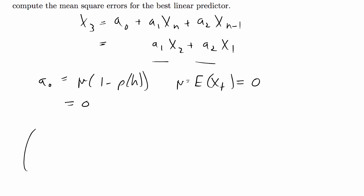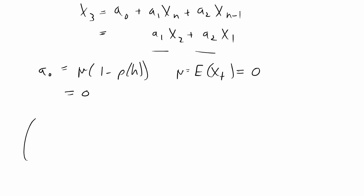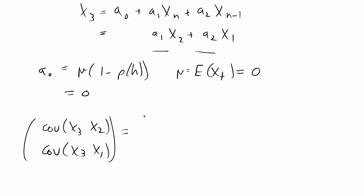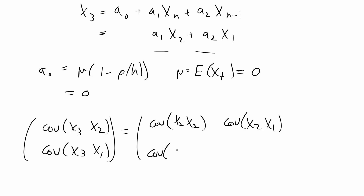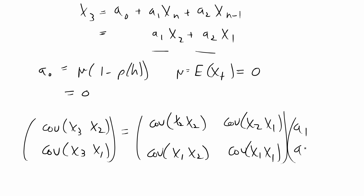To find a1 and a2 I'm going to do some matrix multiplication. The left-hand vector is the autocovariance functions of the predictor and the covariates. In this case the covariates are x2 and x1, so I have the covariance of x3 with x2, and the covariance of x3 with x1. This equals a covariance matrix of the covariates: covariance of x2,x2 (the variance of x2), covariance of x2 and x1, covariance of x1 and x2, and covariance of x1,x1, multiplied by the vector a1, a2.